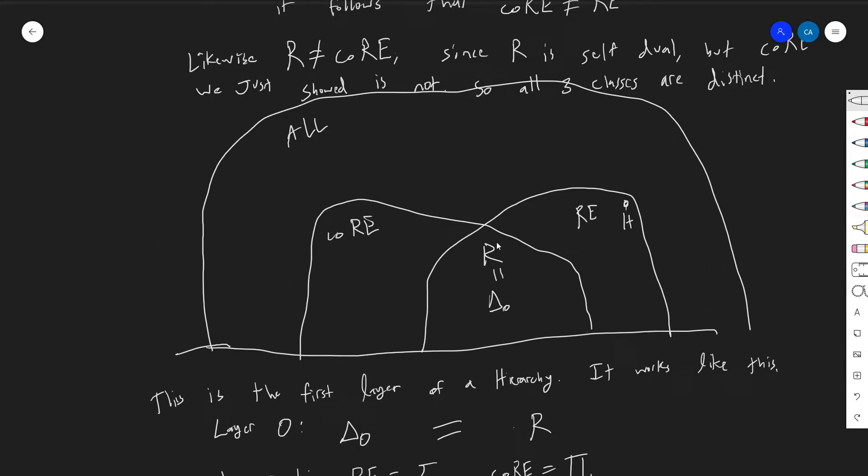Okay, so I just wanted to make a little correction. This is, I made a mistake. This is not delta 0. I always mess this up. Delta 0 is something a little smaller. This is actually delta 1. I should have said that. So yeah, sorry about that.